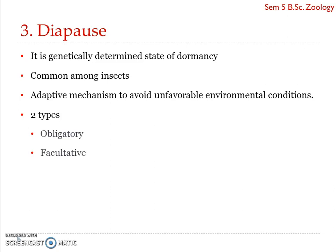The diapause hormone is produced only when the organism is exposed to long photoperiods — when the day length is very long, the brain is triggered to stimulate the subesophageal ganglion to produce this hormone. The hormone then directly influences the ovary to produce diapause eggs.